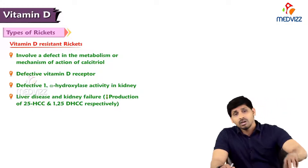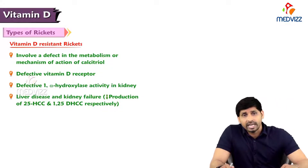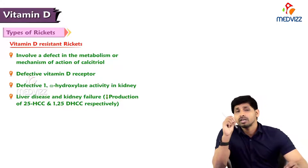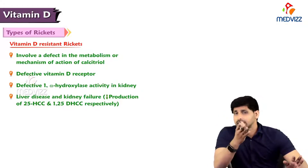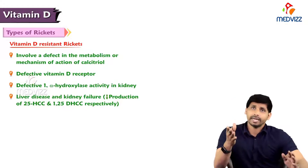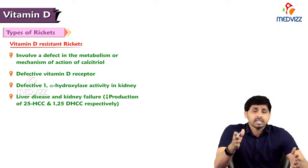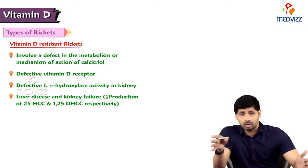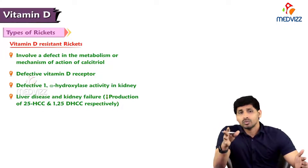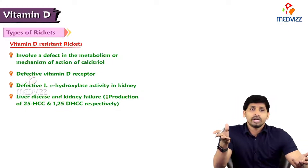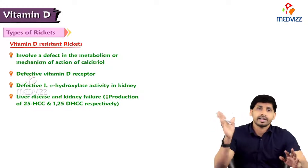Vitamin D–resistant rickets involves a defect in the metabolism or mechanism of action of calcitriol. The vitamin D receptors are defective. Since vitamin D acts as a steroid hormone, it needs receptors to enter the cell and exert its effects. If the vitamin D receptors at the cell membrane are inefficient, it will not show proper effects, leading to vitamin D–resistant rickets.